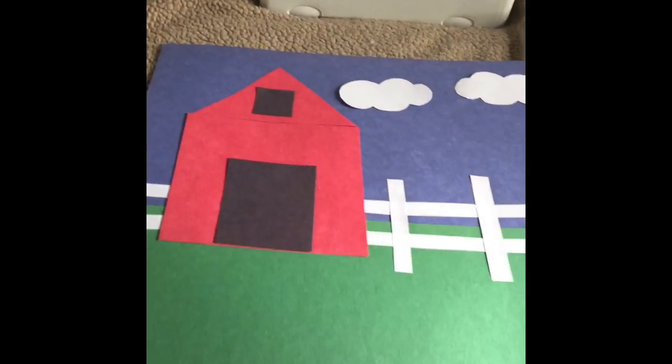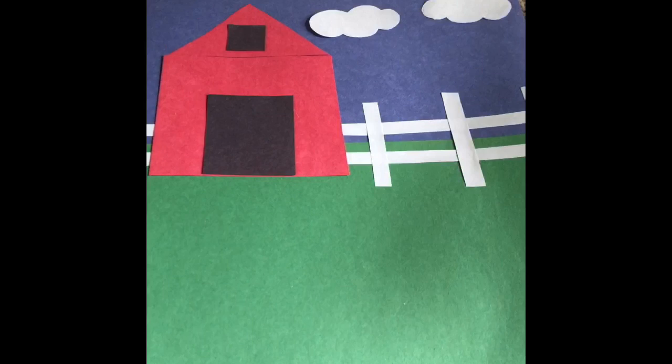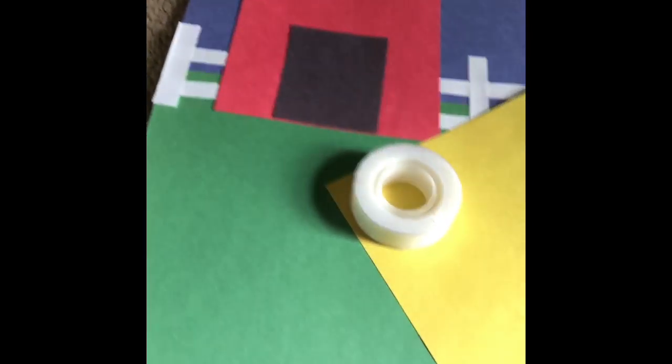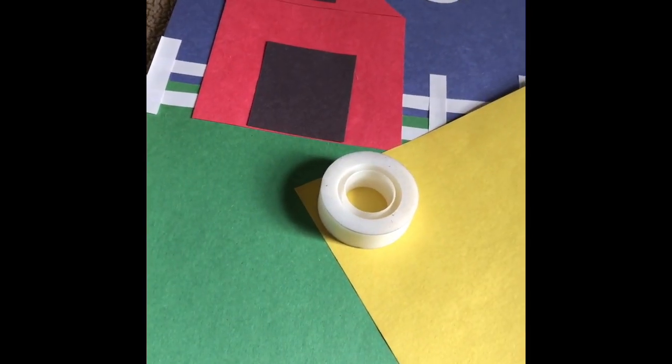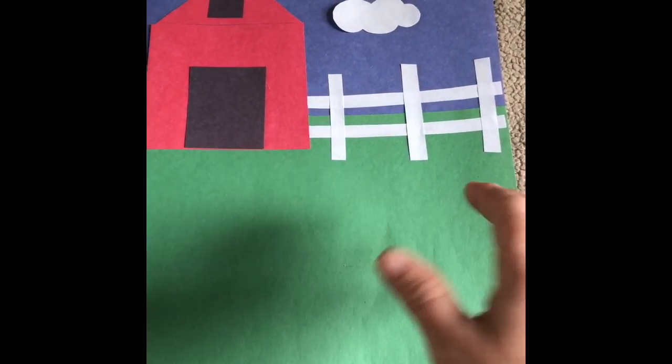So this is the starting point. We're going to make farm animals and we're going to put them on this scene. But the last thing we need is a circle, a small circle, that we can put a sun in the sky. So this is the scene. It's all finished and now it's ready for some animals.